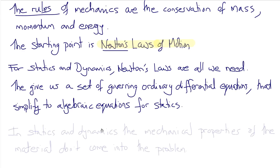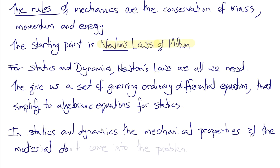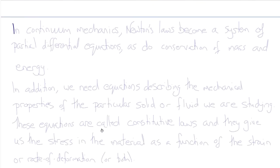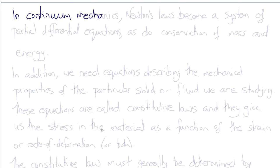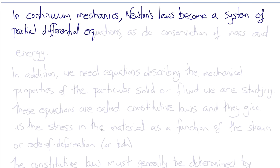In statics and dynamics, the mechanical properties of the material don't come into the problem — all we need is the distribution of forces and the geometry of the body, which we frequently reduce to points such as centers of mass. We don't need to know the physical properties of the body because we consider them rigid. In continuum mechanics, Newton's laws become a system of partial differential equations rather than ordinary differential equations, as do the conservation of mass and energy, because we are now enforcing these conservation laws at every point in the material continuum, not just for a discrete set of points or lumped masses.